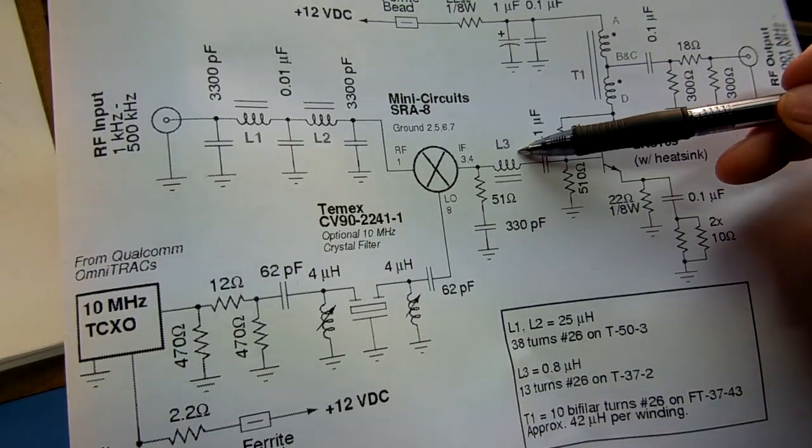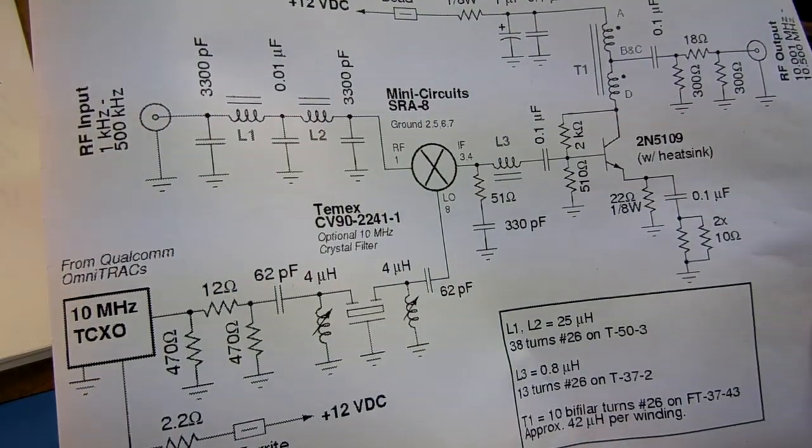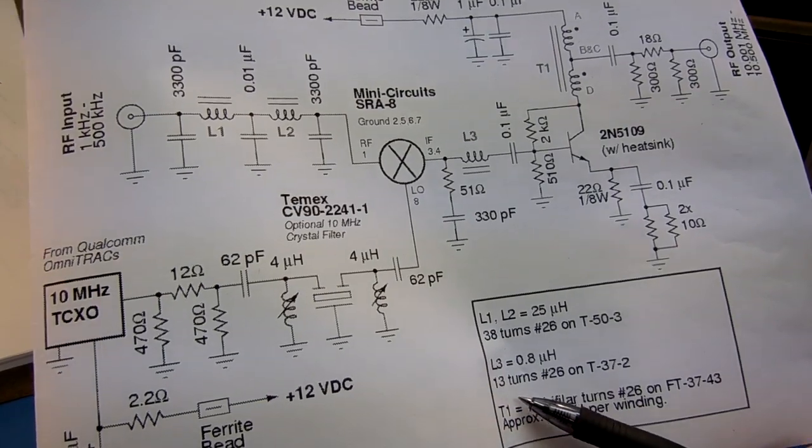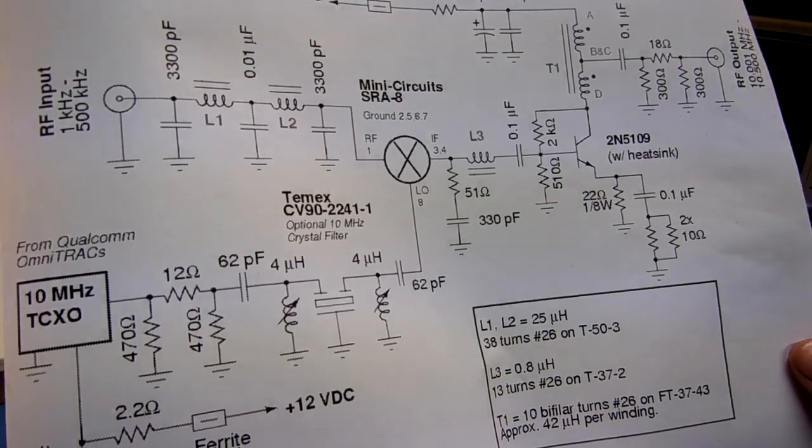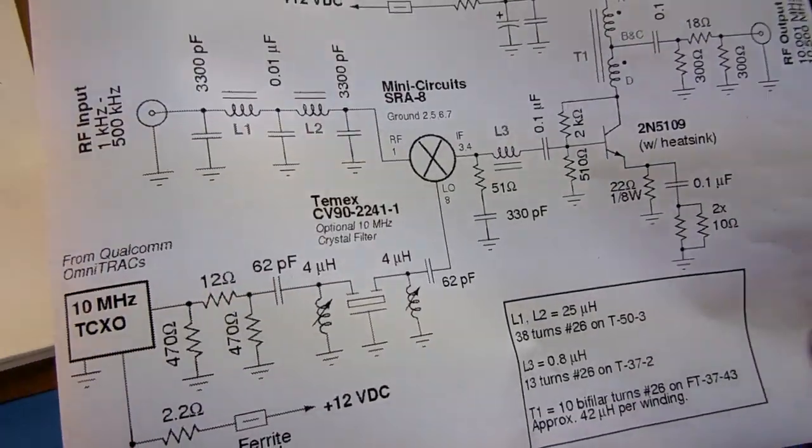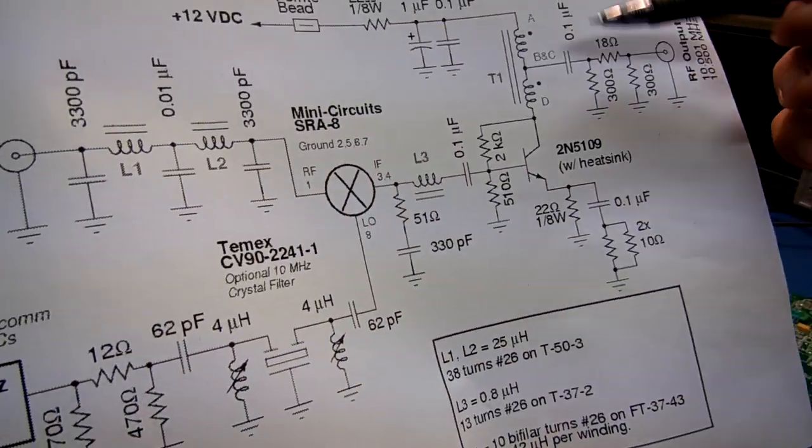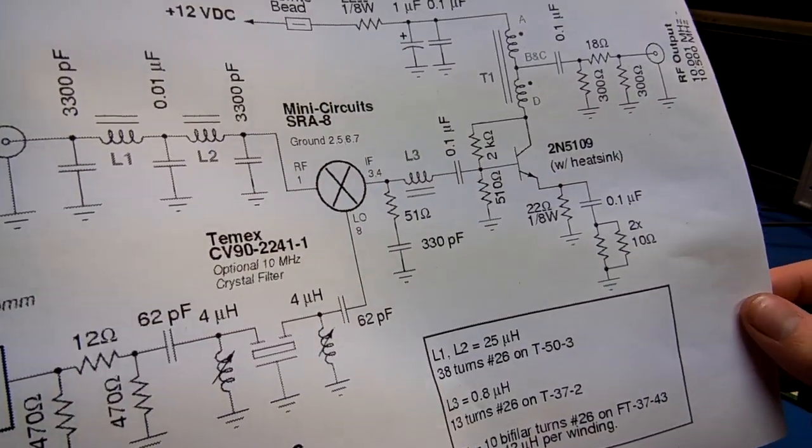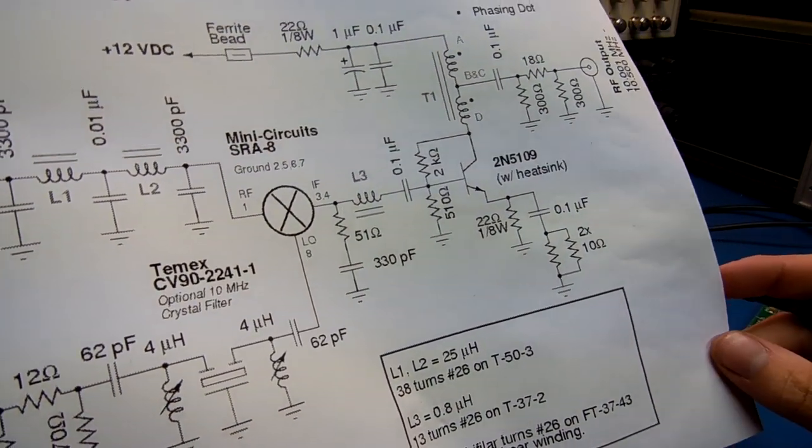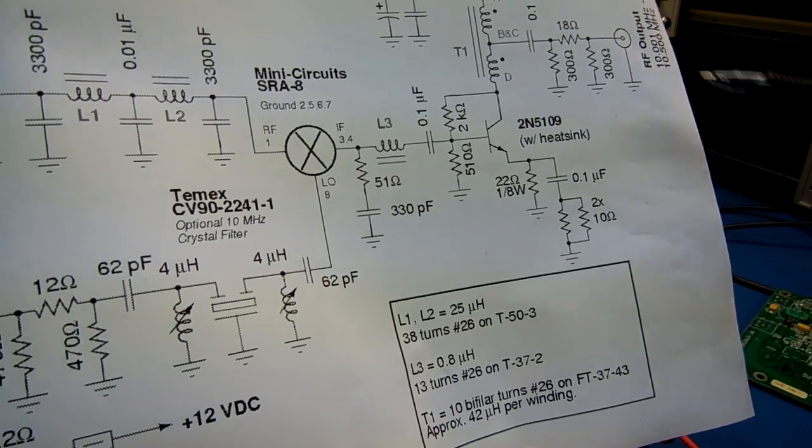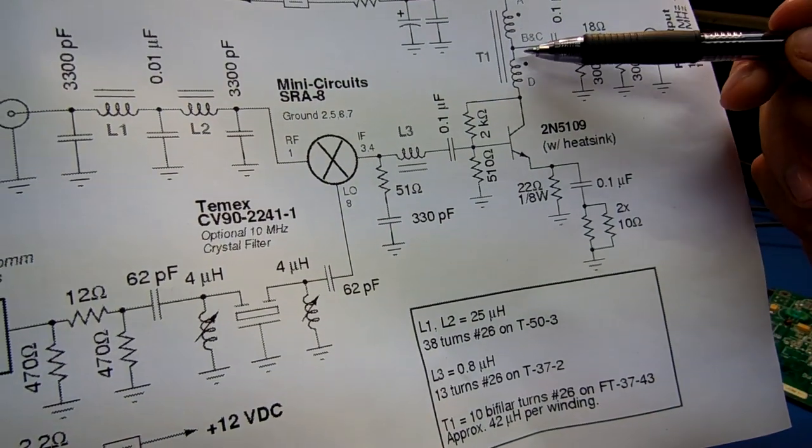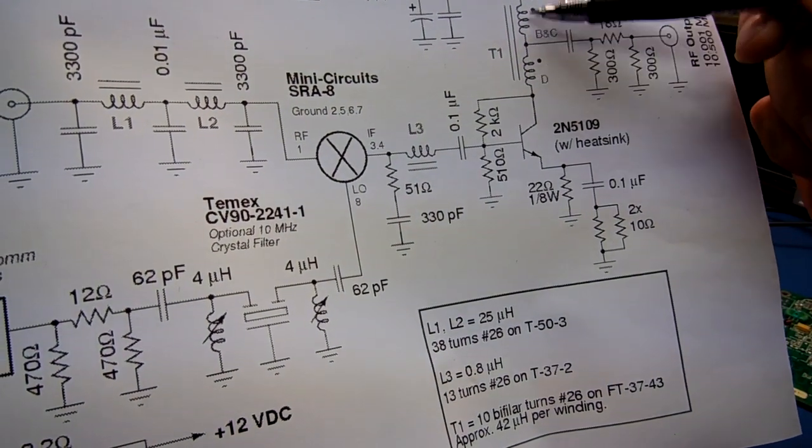L3, which is part of that little low pass filter on the IF amplifier, that's 13 turns of number 26 on the T37-2 core. And T1, of course, is 10 bi-filler turns of number 26 on an FT37-43 ferrite. It's approximately 42 microhenries per winding.